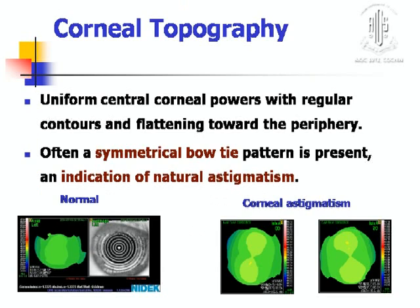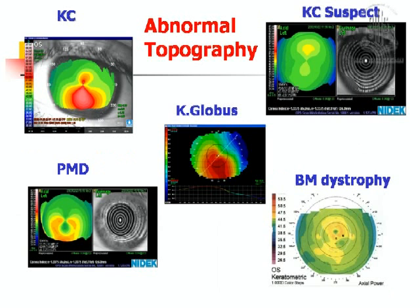Coming to the topography, there is uniform central corneal power with regular contour while flattening towards the periphery. Often we find an asymmetrical bow tie, which is an indication of natural astigmatism. These are a few abnormal topographies seen in diseases of the cornea.